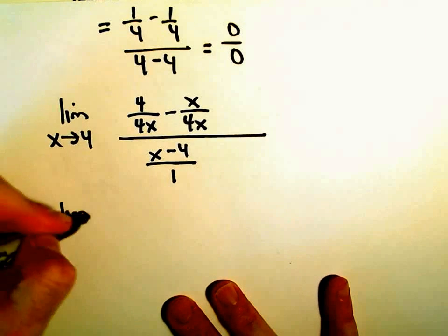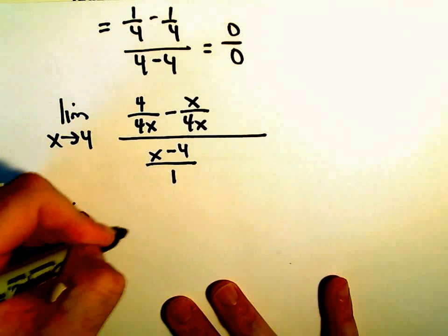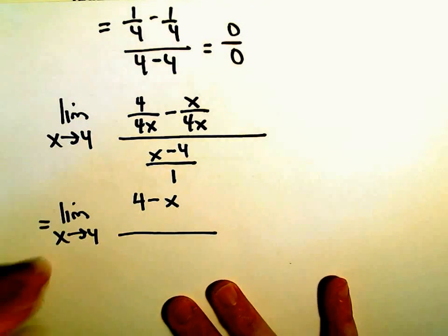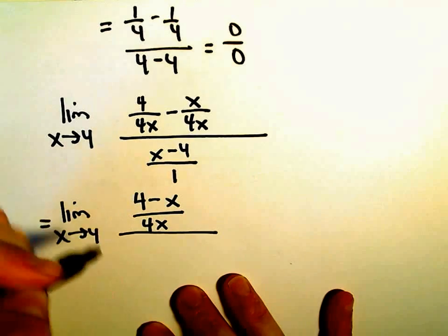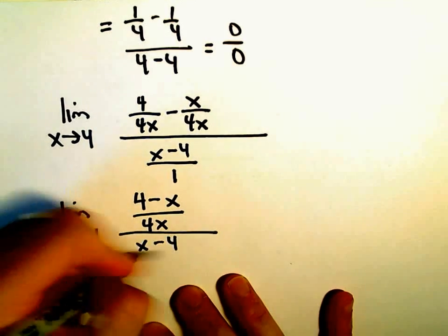Okay, so we can write the numerator now as a single fraction. Can't really do much arithmetic, but we could write that as 4 minus x all over 4x. And again, leaving the denominator alone for just a moment.